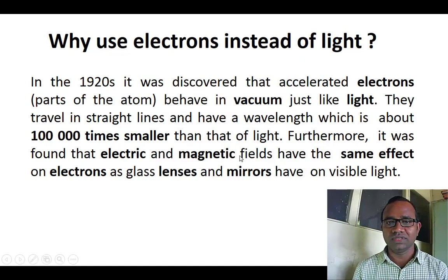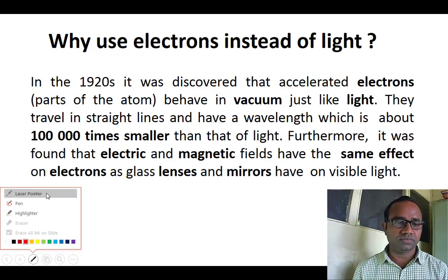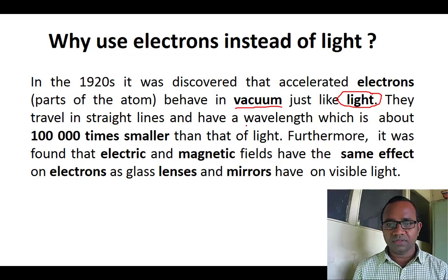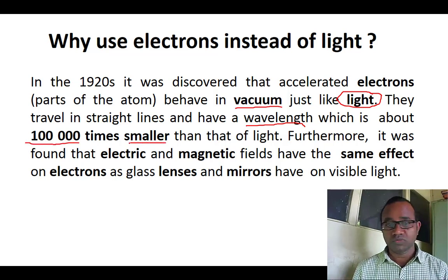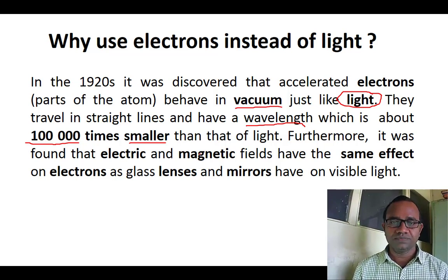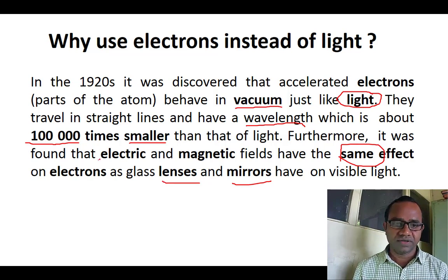We use electrons instead of light because electrons actually behave the same as light. In a vacuum, they travel in a straight line in constant interaction with the sample, and they have a wavelength like light — but one hundred thousand times smaller than visible light. The much smaller the wavelength, the higher definition image of the object that can be produced.